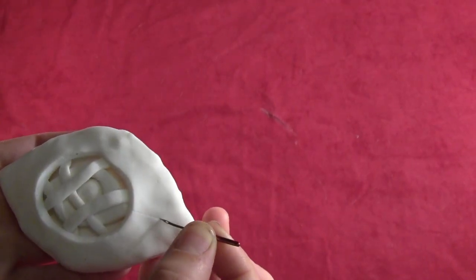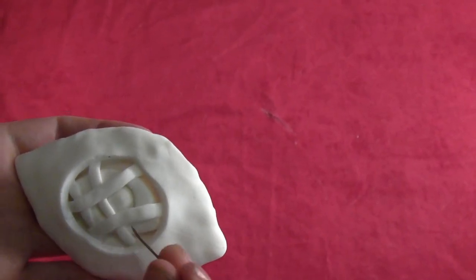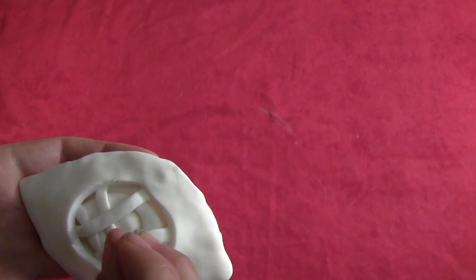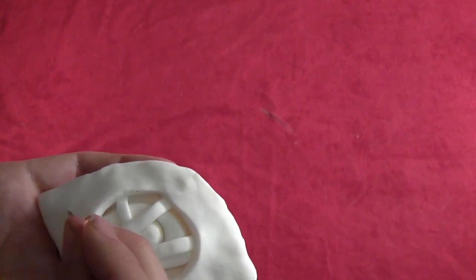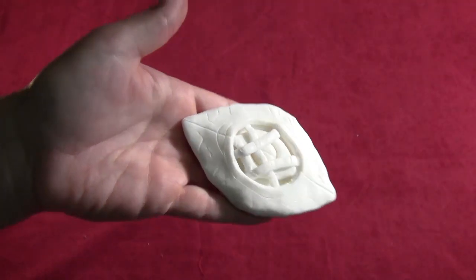So then take a needle or a toothpick and draw in all the little decorative lines. They don't show up that well in the plain clay but they look pretty cool once it's painted. You can kind of see them here.